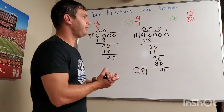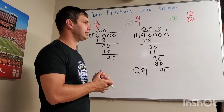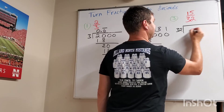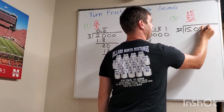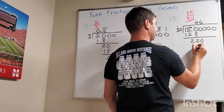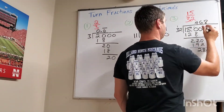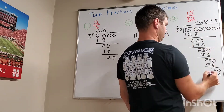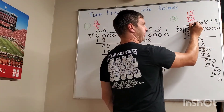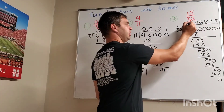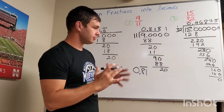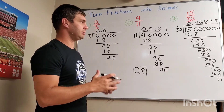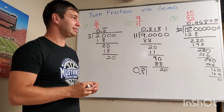Last one, number 3: 15 divided by 32. A nasty one, just so we can see what happens. We're going to take 32 and see how many times it goes into 15. This one took a while, but after doing the math, we ended up with 0.46875. Eventually I did get to 0 at the end, so therefore 15 thirty-seconds is the same as the decimal 0.46875.